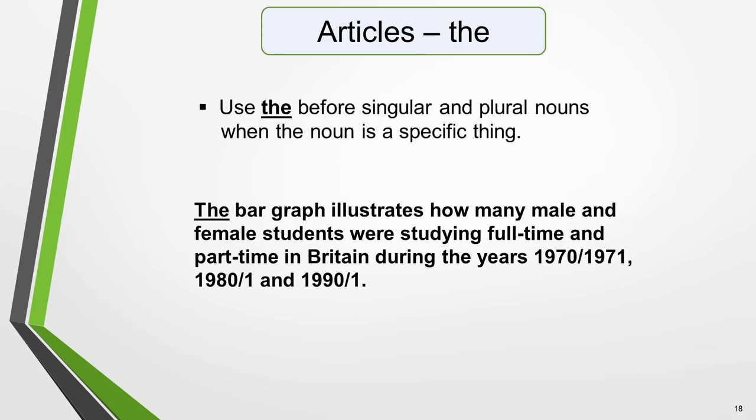Now we move on to articles. Many languages don't have articles, and native speakers of these languages can find it a huge challenge to remember to use them. In English there are three articles: 'the', 'a', and 'an'. Each is used in specific instances.